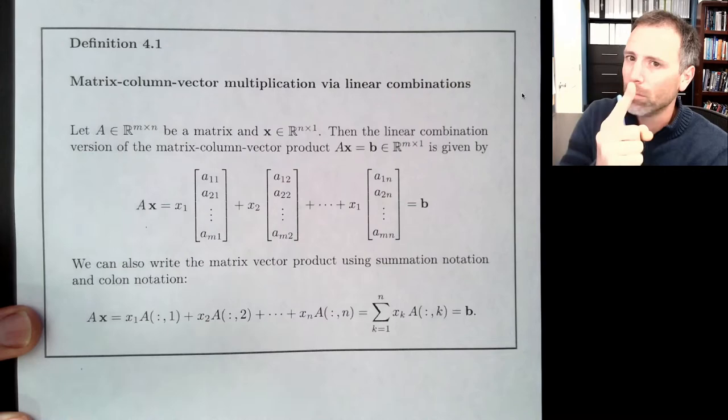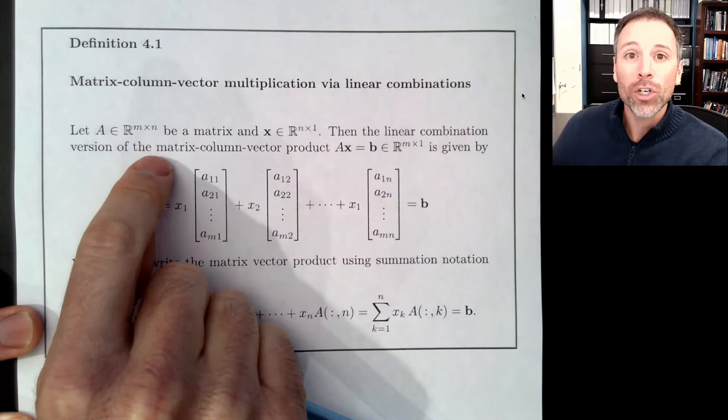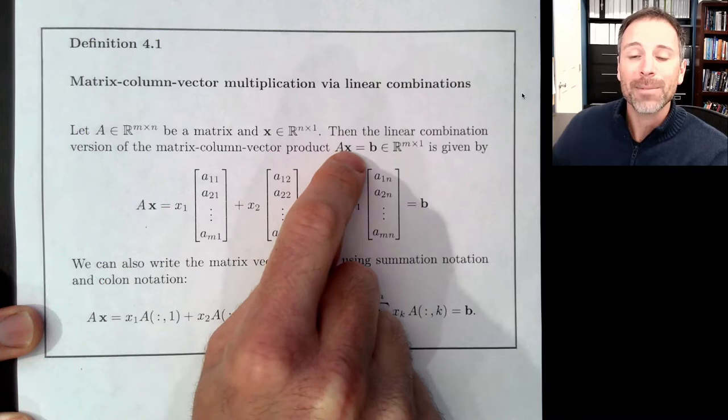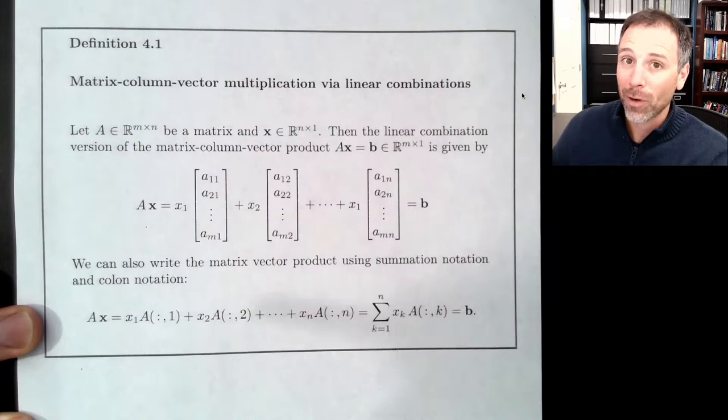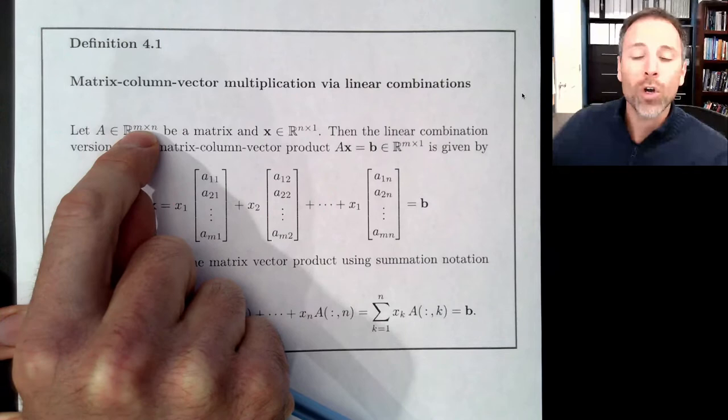Assuming we have A, which is an m by n matrix, and x, which is an n by 1 column vector, we say the linear combination version of matrix column vector multiplication is A times x, which we'll call the vector output B. B will be an m by 1 column vector. Notice that the variable m matches the number of rows of A.